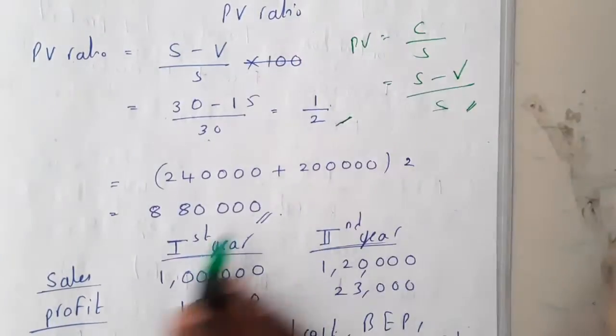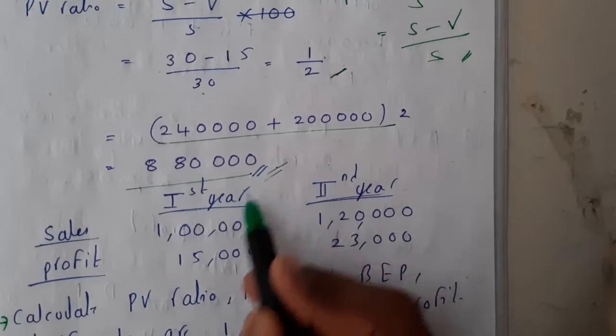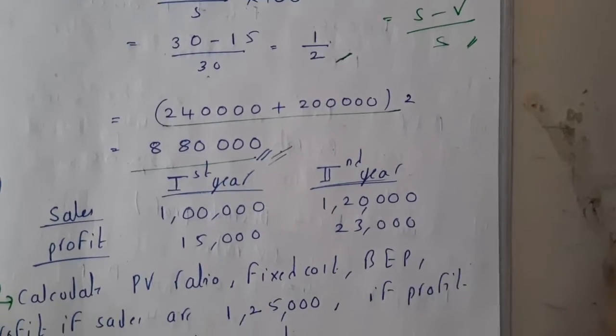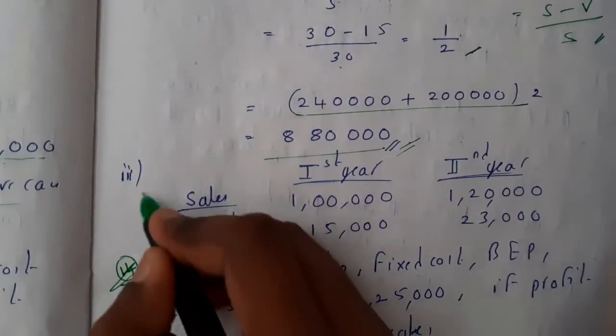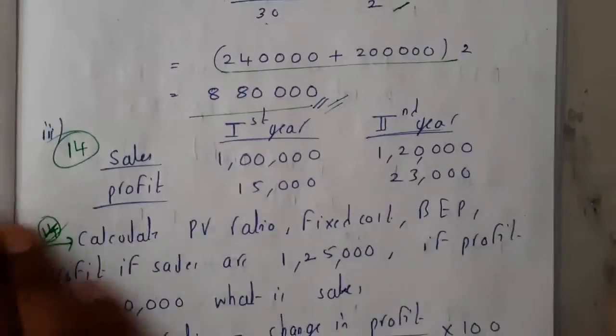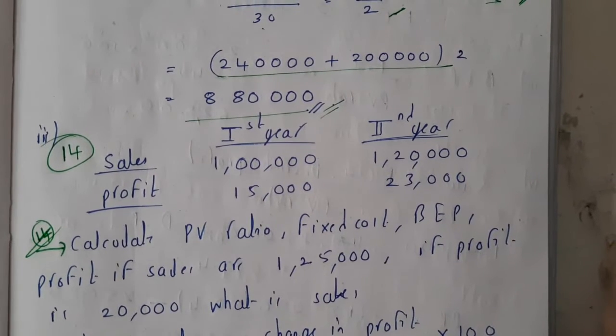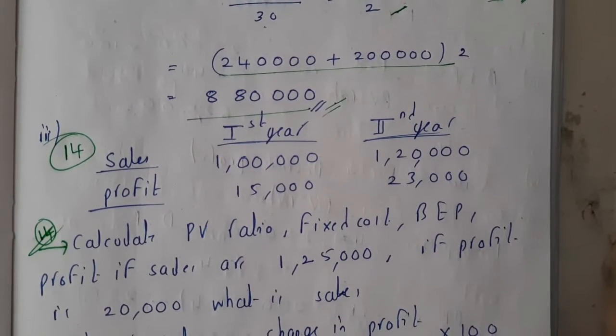Substituting PV ratio as 1/2, the numerator gets multiplied by 2, giving the final sales figure. In the next lecture we will go through one more problem. Thank you for watching.